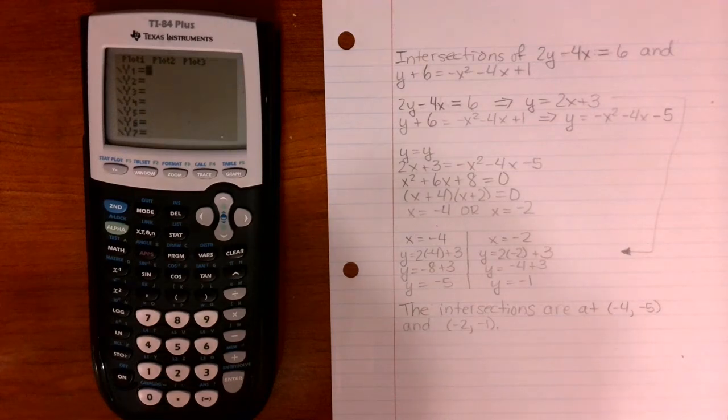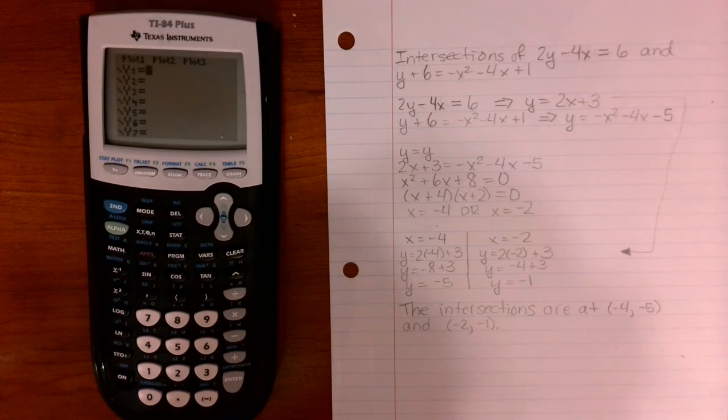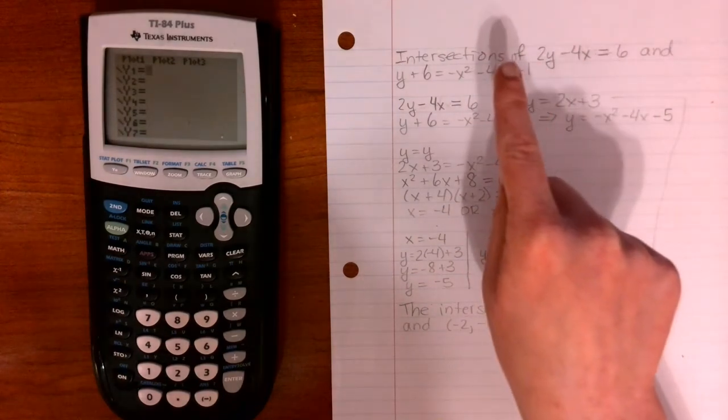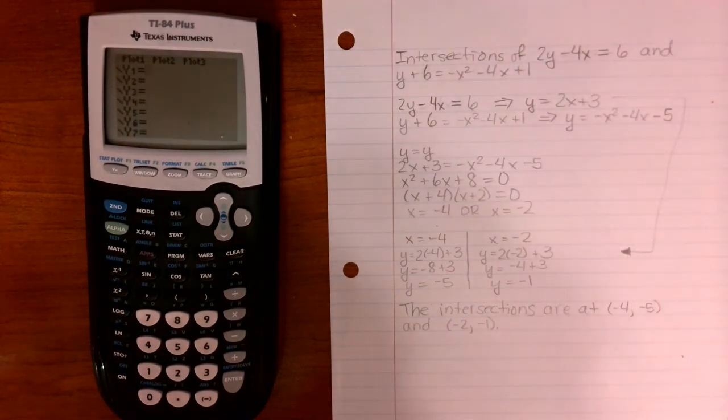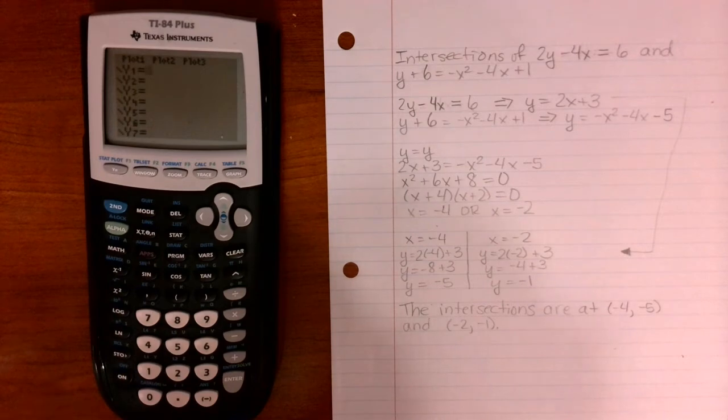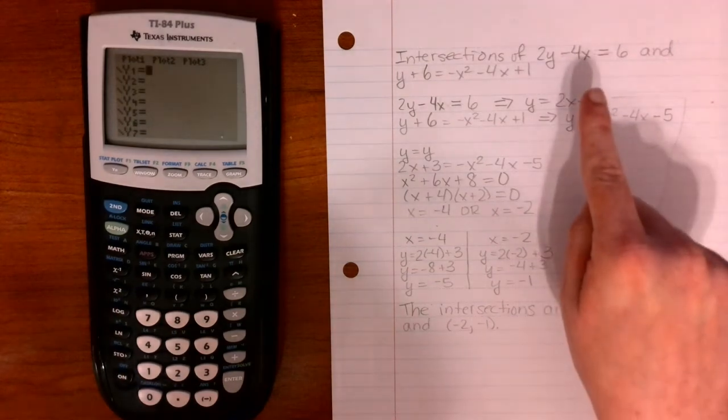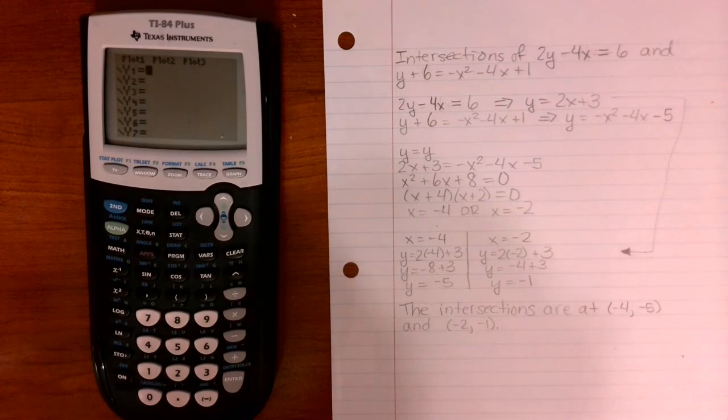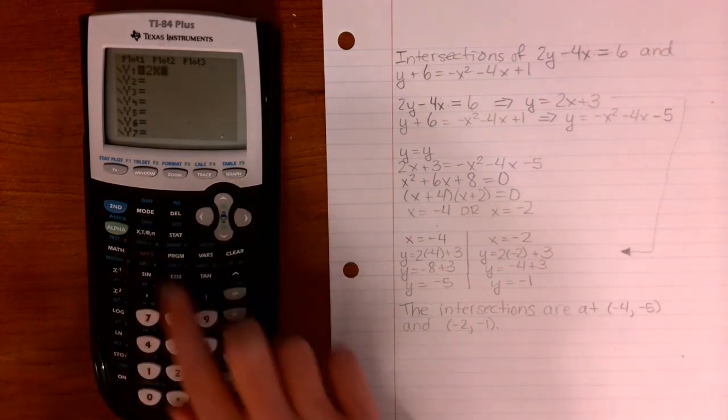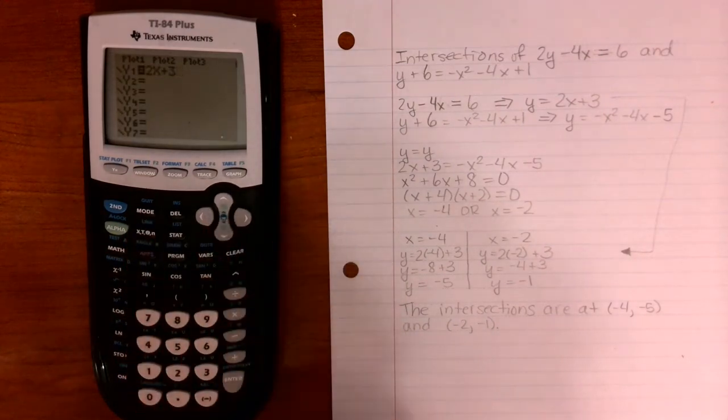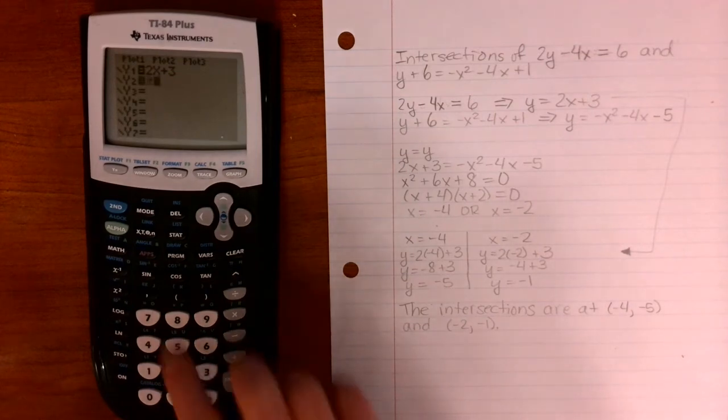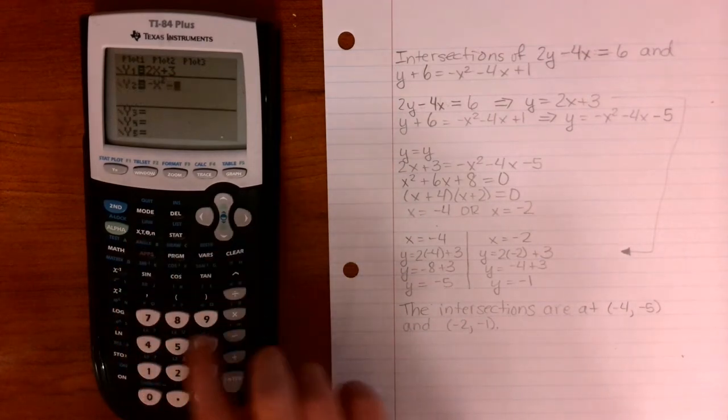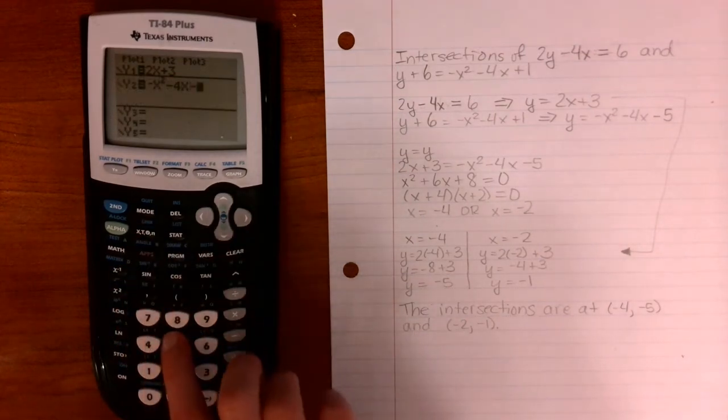However, the problem is that we need them in the form of y is equal to something. And these two equations, they're not in that form. However, we have already put them in the form of Y= here and here. So for Y1, let's enter in 2x plus 3. And for Y2, let's enter in negative x squared minus 4x minus 5.